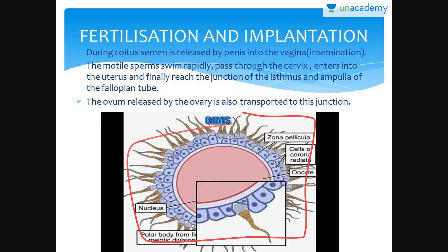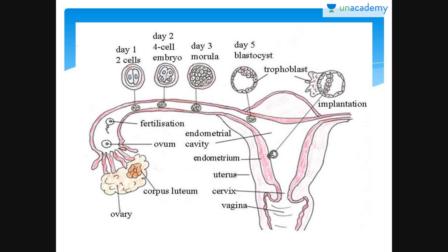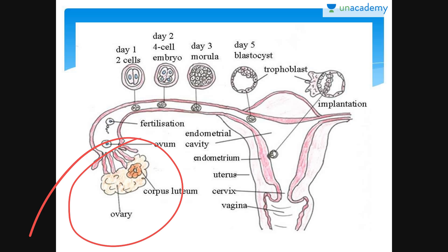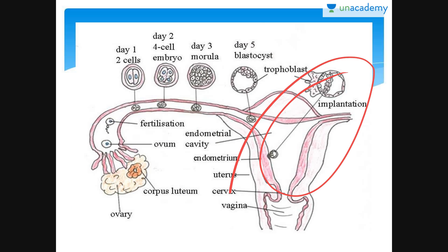If you can have a look here, this is how insemination occurs and this is the process of implantation. A blastocyst completely embedded in the uterine endometrium is called implantation — when the blastocyst completely implants and joins the wall, that is known as implantation.